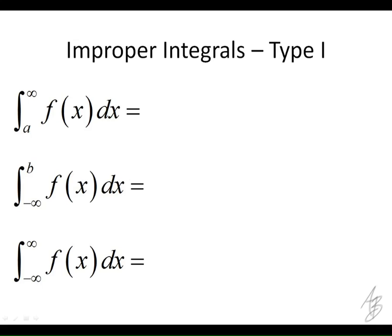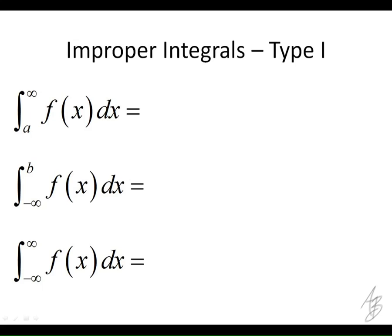The Type I improper integrals come in these three forms. To work with infinity, we rewrite the integral as a limit. Since infinity is not a number, we can't evaluate this using the second fundamental theorem of calculus — we can't just find an antiderivative and evaluate at the upper limit. So we replace infinity with a variable t, and then look at what happens as that variable approaches infinity.